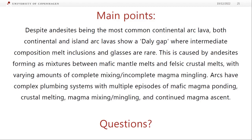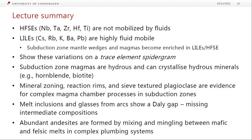To sum up: even though andesites are the most common continental arc lava, both continental and island arcs have a Daly gap — rare intermediate composition melt inclusions and glasses. Andesites form as mixtures between mafic mantle melts and felsic crustal melts, with varying amounts of complete mixing or incomplete magma mingling. Arcs have very complex plumbing systems with multiple episodes of magma ponding, crustal melting, mixing, mingling, and continued ascent. The reading for this week is the two Winter chapters and one chapter from Gill — an announcement with details will be sent.